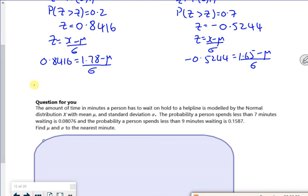So take the sigma, take the mu, so I've got mu plus 0.8416 times sigma is 1.78. Take the mu, take the sigma, take the mu from the other side.